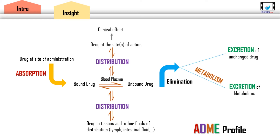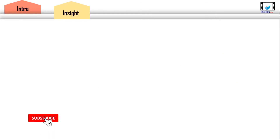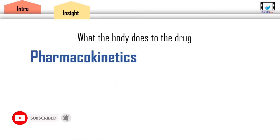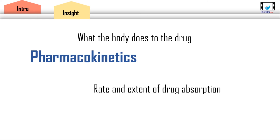This is a simple representation of what happens to the drug inside the body — or in other words, what the body does to the drug — which is termed pharmacokinetics. Pharmacokinetics is very important for knowing how much drug is in blood, how long it takes to get there, and for how long it will remain. In short, it helps determine the rate and extent of drug absorption, which is termed bioavailability.